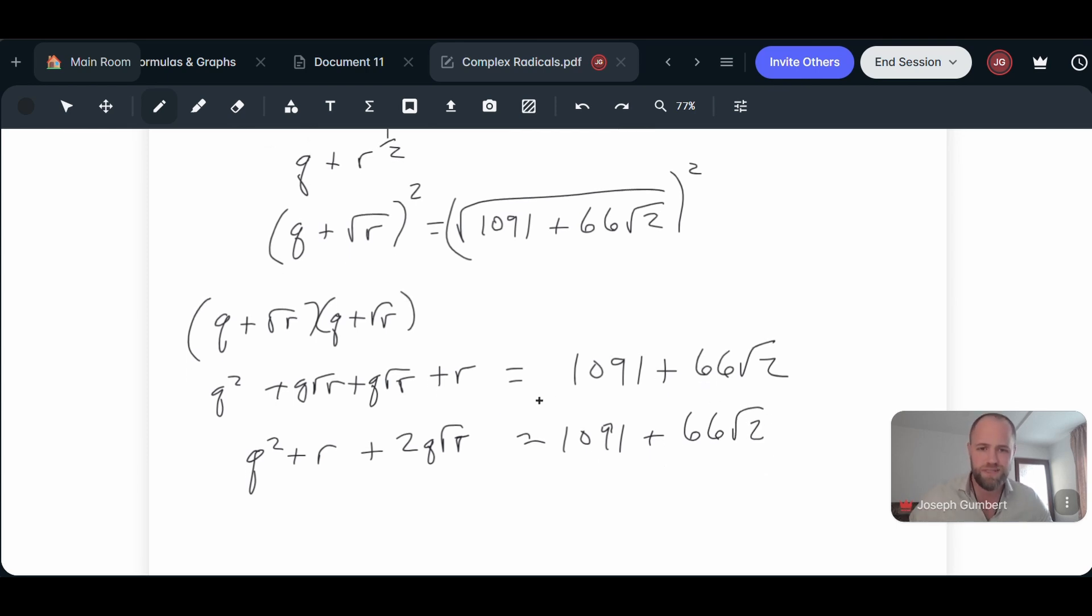So I can already see here that I kind of have a bit of a match or a bit of a mirror going on. And so most likely I could say something like q squared plus r is going to equal 1091. And then I can also say that 2q root r is going to equal 66 root 2. And this immediately makes me suspect then that r is going to equal 2 and that q is going to equal 33.